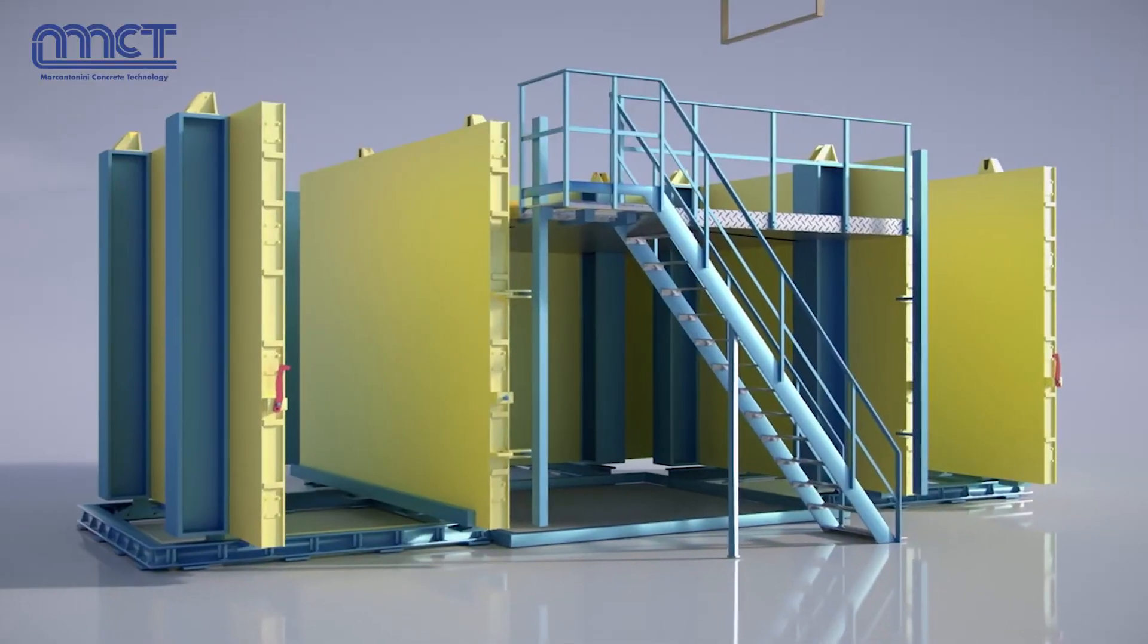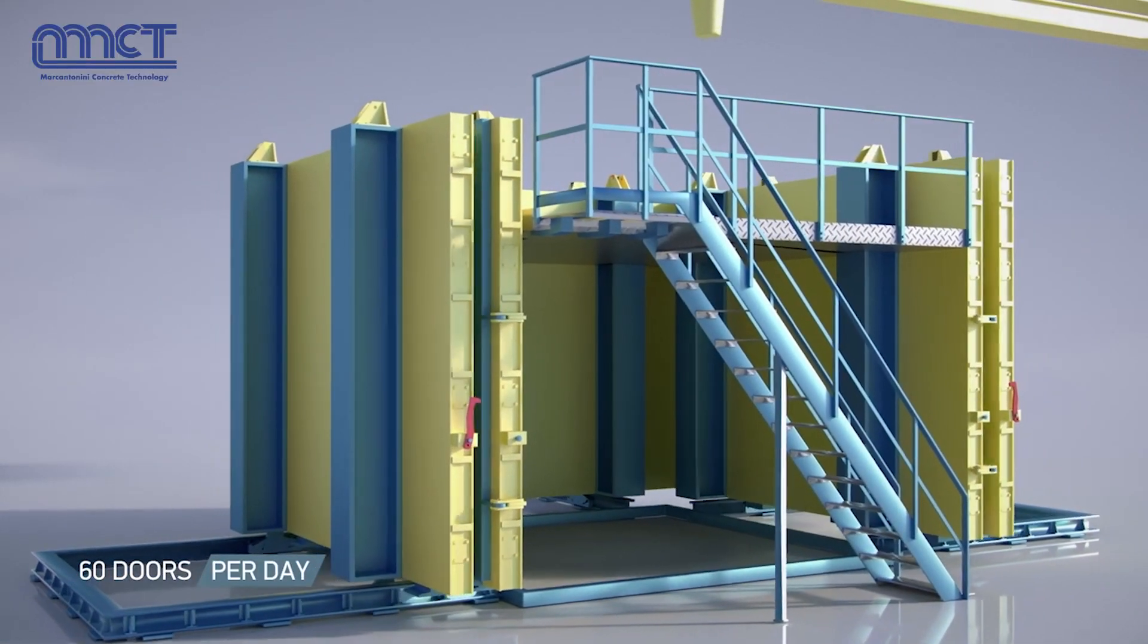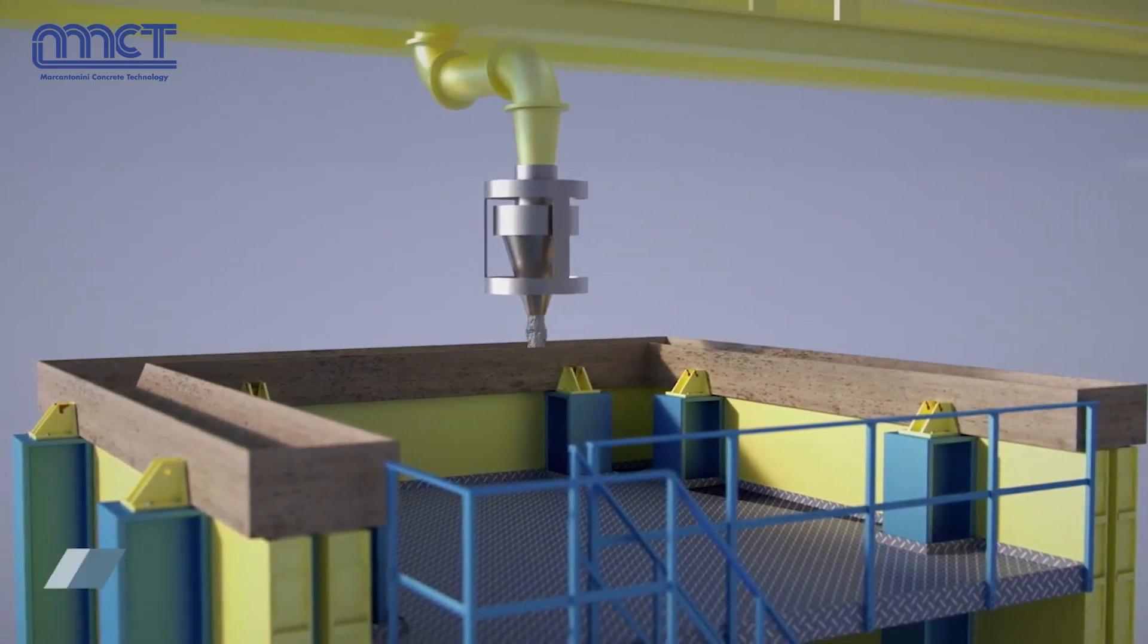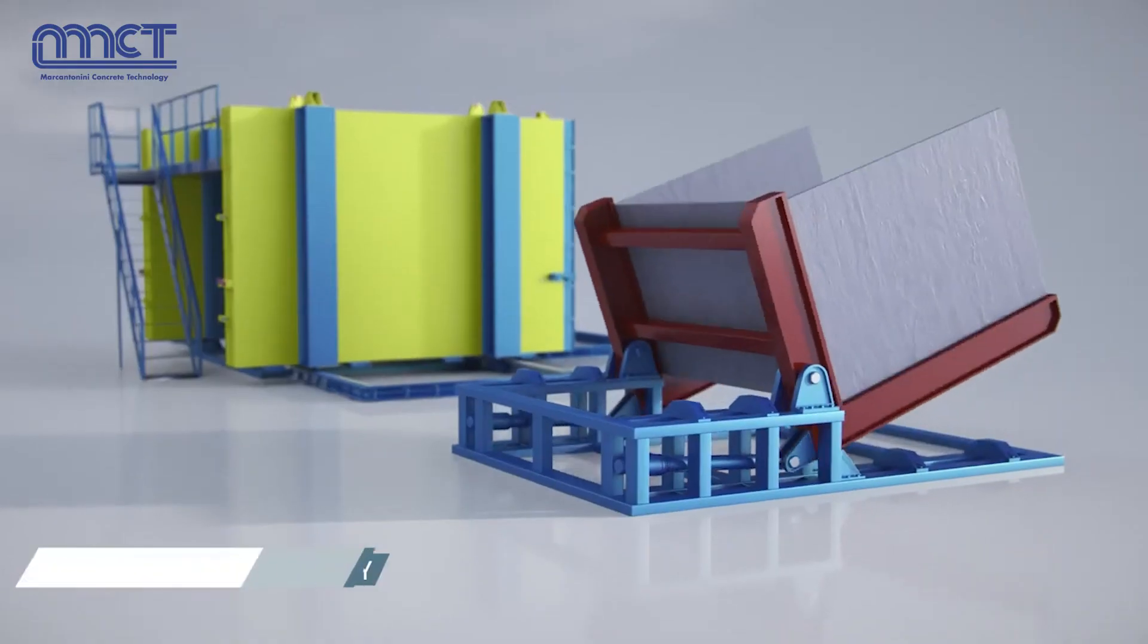Production starts with preparing the forms and fixing accessories, electrical conduit, window frames and connection hardware. The form is then closed and the concrete cast. Curing is accelerated by careful application of heat.